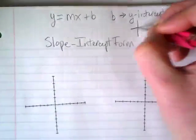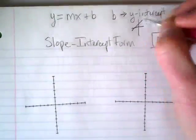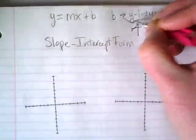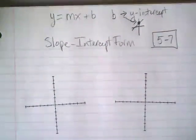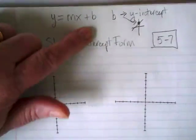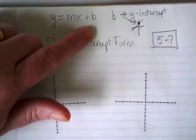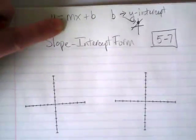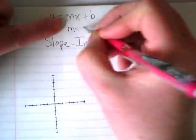So on any graph, this right here would be the y-intercept. So if you have an equation where this is plus 3, you would find the 3 on the y-axis. What's the m stand for? Slope. m is our slope.